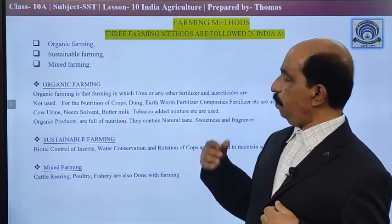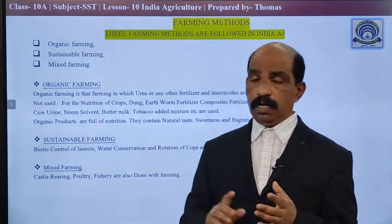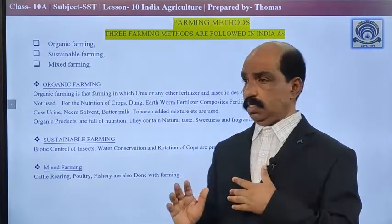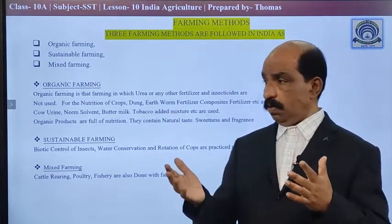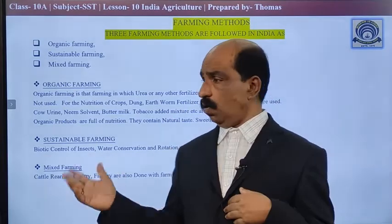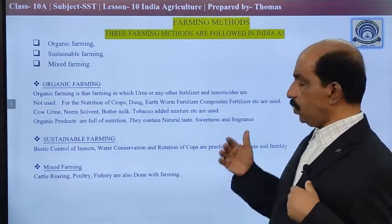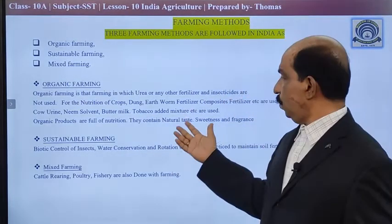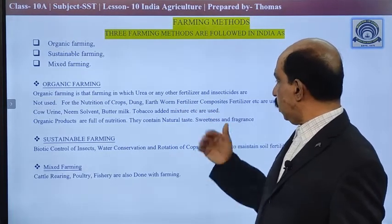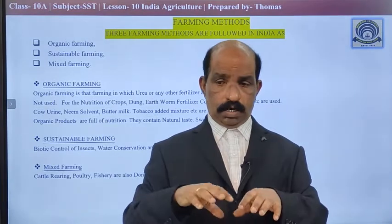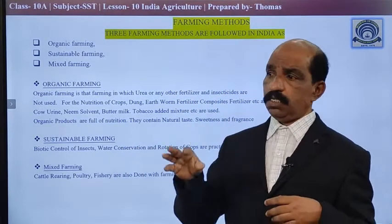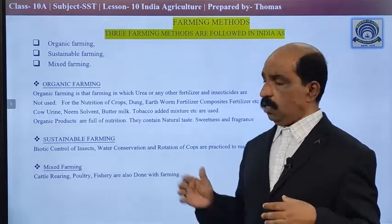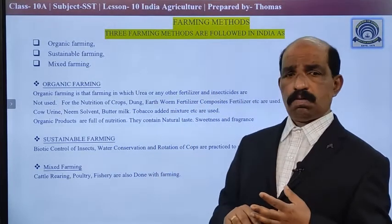To avoid it, there is a trend among farmers and people to go for organic farming. In organic farming, chemical fertilizer, pesticides, etc. are not at all used, or their use is minimized. Instead, other natural fertilizers are used — cow dung, earthworm fertilizer, composite fertilizer, etc. Likewise, instead of pesticides, we use cow urine, neem solvent, buttermilk, tobacco-added mixture, etc. Tobacco is cut and put in water, and that solution can be used as a material for killing pests. Such a way, use of fertilizer is reduced or maximum avoided.